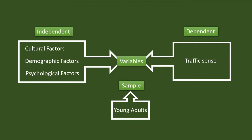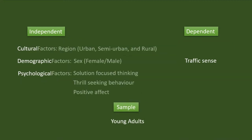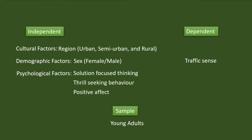Finally, I identified that the place where the individual is born and brought up is one major cultural factor that can have an influence on traffic sense. I considered region as a variable that may help me understand the cultural influence. I also understood sex as an important demographic factor that could influence traffic sense. The psychological factors I considered are solution-focused thinking, thrill-seeking behaviour, and positive affect.